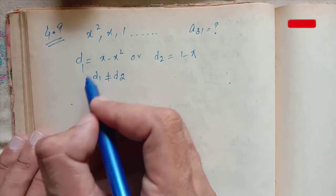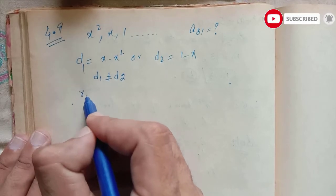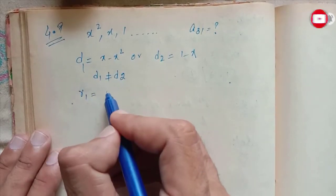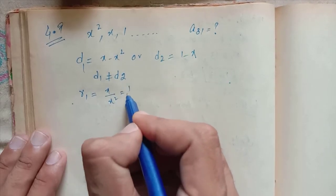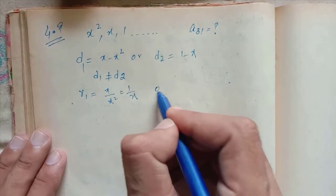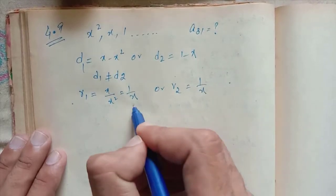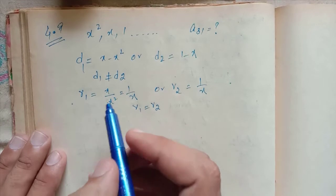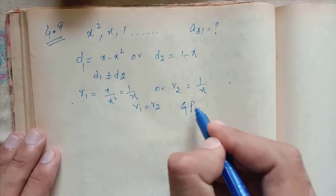Now let's take the ratio between two numbers. r1 equals x divided by x², this equals 1/x. r2 equals 1/x. So r1 equals r2. The series is geometric progression.